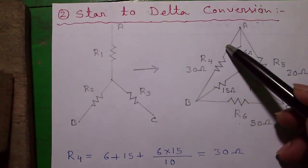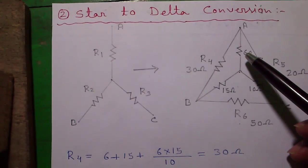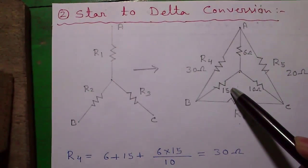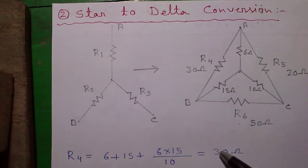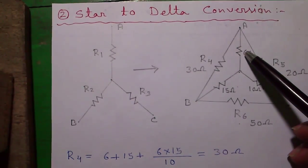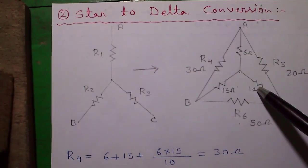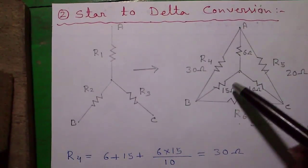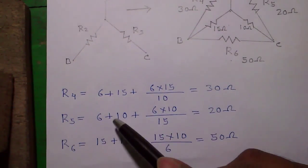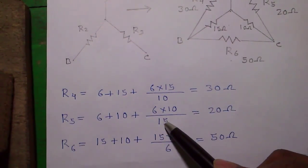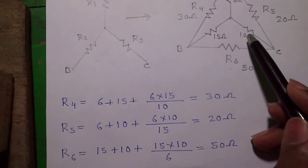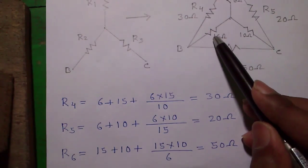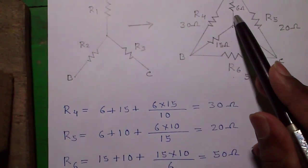So for R4 this side it will be 6 plus 15 plus 6 into 15 divided by 10 which is 30 ohm. For R5 it will be 6 plus 10 plus 6 into 10 divided by 15. And for R6 it will be 15 plus 10 plus 15 into 10 divided by 6.